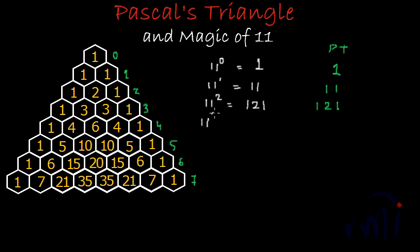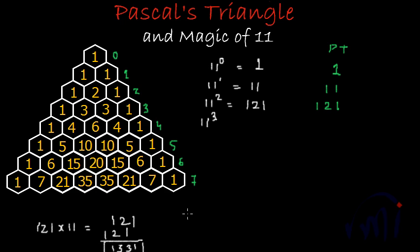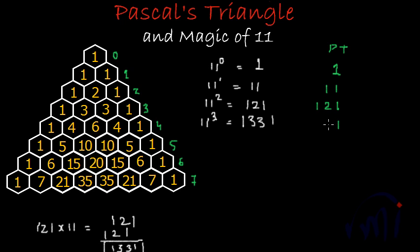Similarly, 11 to the power 3 is 121 multiplied by 11. Computing: 121 plus 1210 — that is 1 plus 0 = 1, 2 plus 1 = 3, 1 plus 2 = 3, and 1 — giving 1331. This 1331 can be found in the third row of Pascal's Triangle: units place 1, tens place 3, hundreds place 3, thousands place 1.